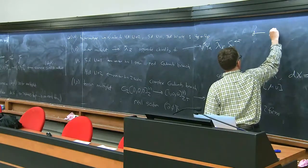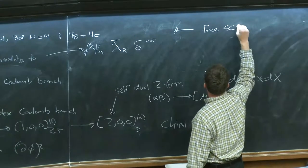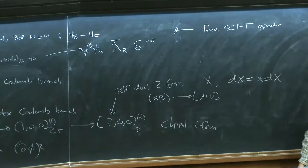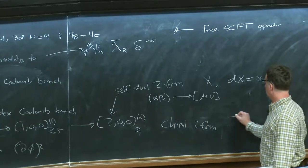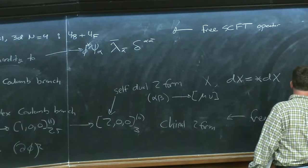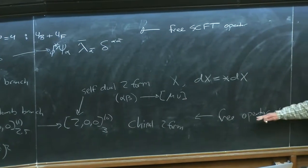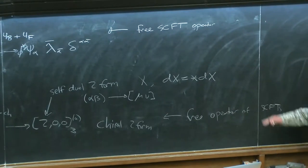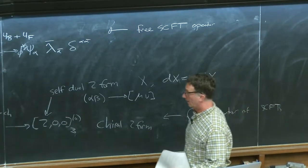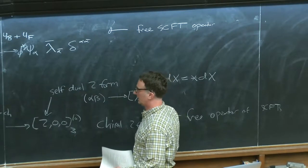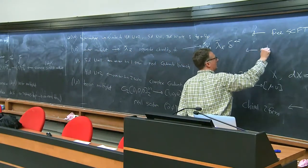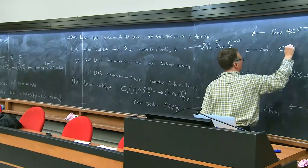The hypermultiplet, as a free field, is a free superconformal field theory operator — it's in the classification of operators of the superconformal group. The tensor multiplet is also a free superconformal operator. In contrast, the vector multiplet is not a conformal field theory operator.